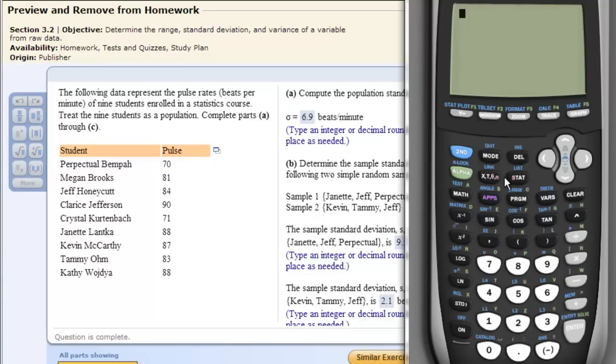So the first thing we need to do is put it in list 1. That's under STAT, and then click Edit. I will put all this information here into the L1 list. Remember if there's something in a list, like I have over here now in L2, you can go all the way up to the top, hit Clear, and Enter, and it will clear it.